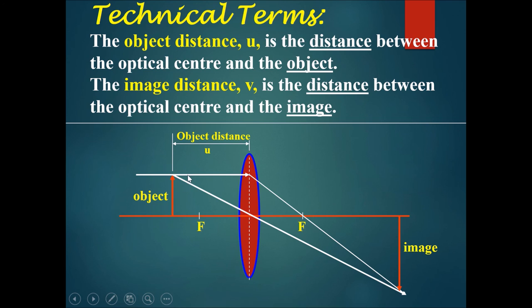Now this object, once light comes from the object and passes through the lens, it would form an image. And this length here will be called the image distance v, which is the distance between the optical center and the image.